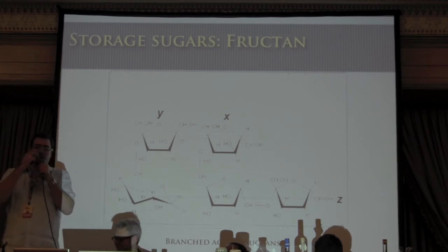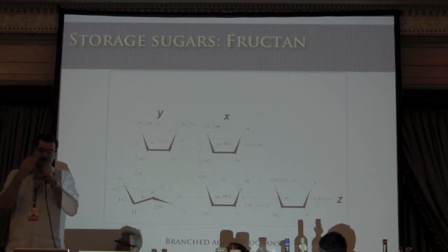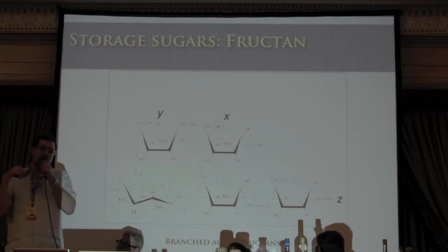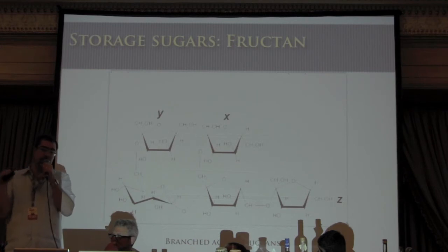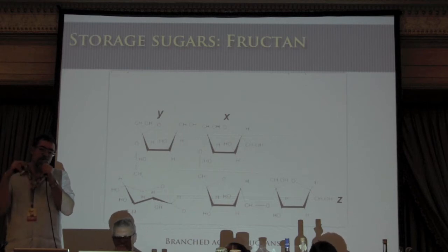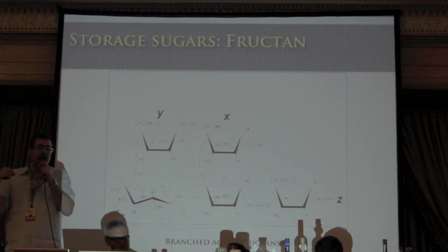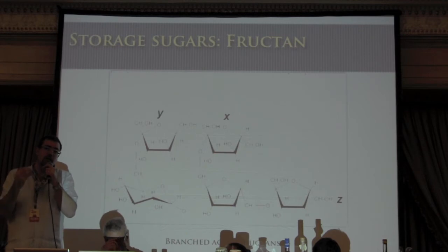Starches are made with glucose — glucose linked one to the next, forming very large chains that are insoluble and form crystals. That's what you find in grains, and the malting process in whiskey is about first breaking this sugar down. In agave, the sugars are always soluble, which is really important. For rapid metabolic decisions, the sugar is maintained as fructans — fructose chains rather than glucose chains.